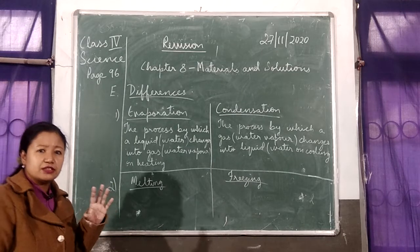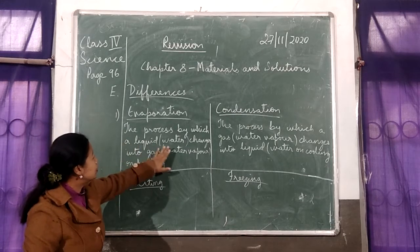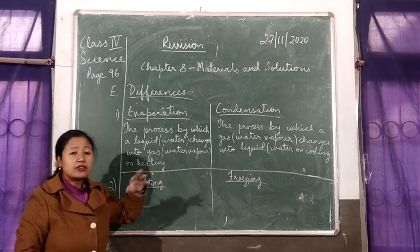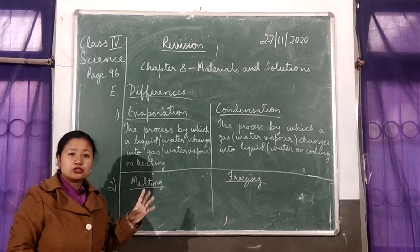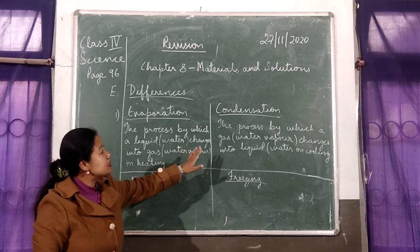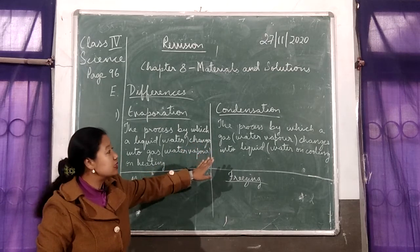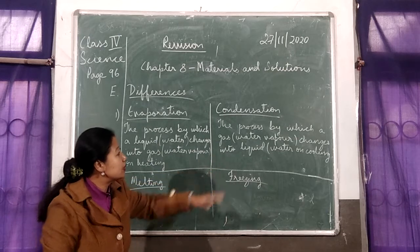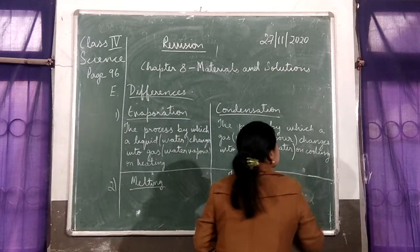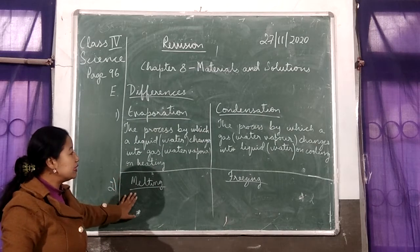So you just have to write in short. What is evaporation? The process by which liquid water changes into gas or water vapor on heating. You can write in your own words also, provided all this is there. Condensation is the process by which a gas or water vapor changes into liquid or water on cooling. This is how you need to do differences.